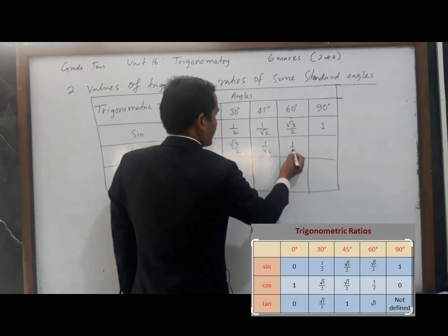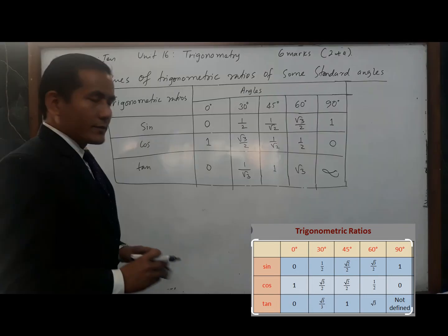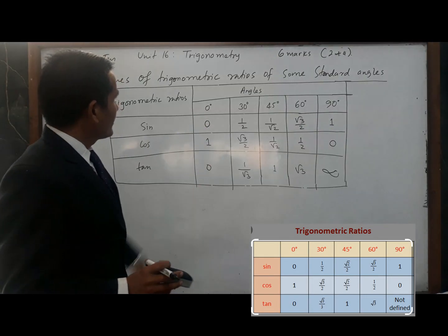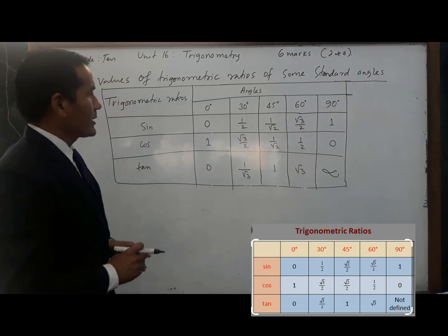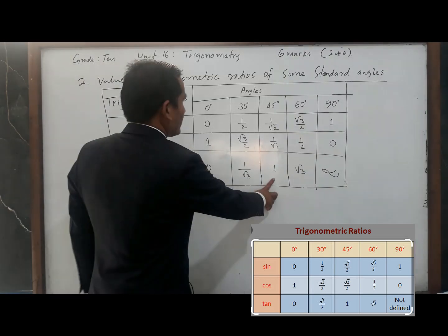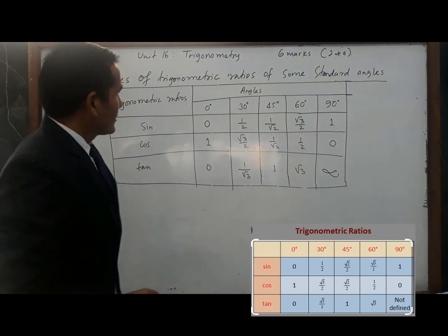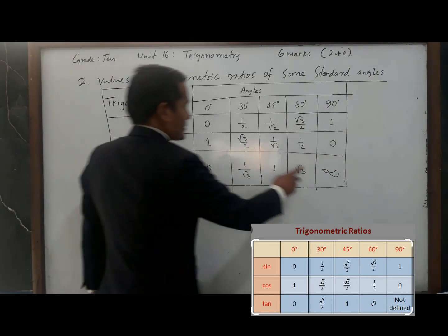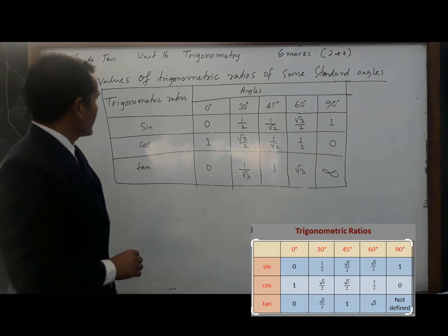Tan 0 degree is 0. Tan 30 degree is 1 by root 3. Tan 45 degree is 1. Tan 60 degree is root 3. And tan 90 degree is infinity, undefined.